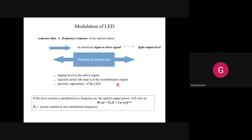Most of the recombination process happens in the active region, where most of the charge flow occurs in the three heterojunction confinement layers. These three factors - doping profile, carrier lifetime, and parasitic capacitance - all contribute to determining to what extent we can get the final modulation contribution from the LED source.